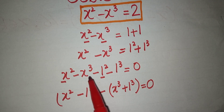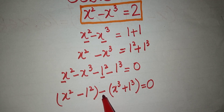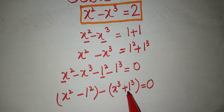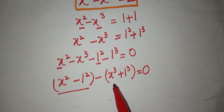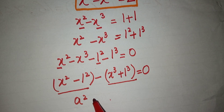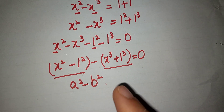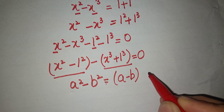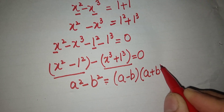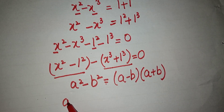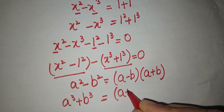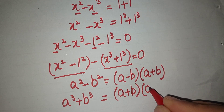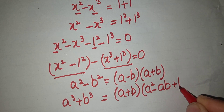When we take x cubed minus 1 cubed, we take minus as common, so x cubed plus 1 cubed becomes positive. Now we apply the square formula — a squared minus b squared equals (a minus b)(a plus b) — and the cubic formula: a cubed plus b cubed equals (a plus b)(a squared minus ab plus b squared).